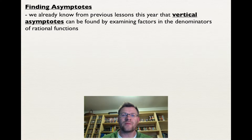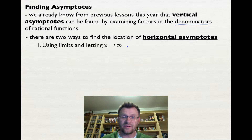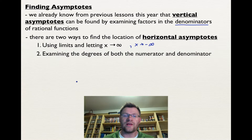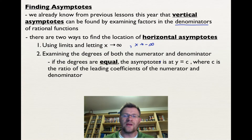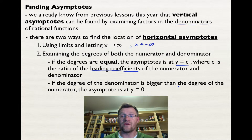Now let's talk about finding asymptotes. Vertical asymptotes can be found by examining factors in the denominator of rational functions. There are two ways to find horizontal asymptotes: the first way is to use limits and let x approach infinity or negative infinity. Examining the degrees of both the numerator and denominator also tells us the location. If the degrees are equal, the asymptote is at y equals c, where c is the ratio of the leading coefficients. If the degree of the denominator is bigger, the asymptote is at y equals zero.